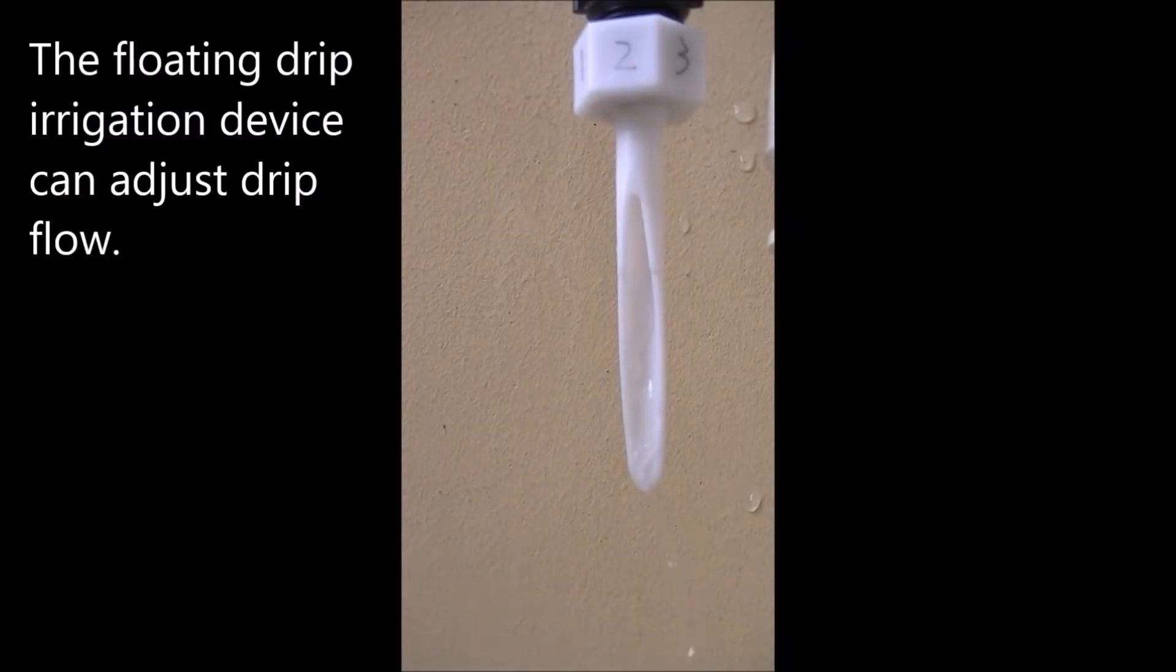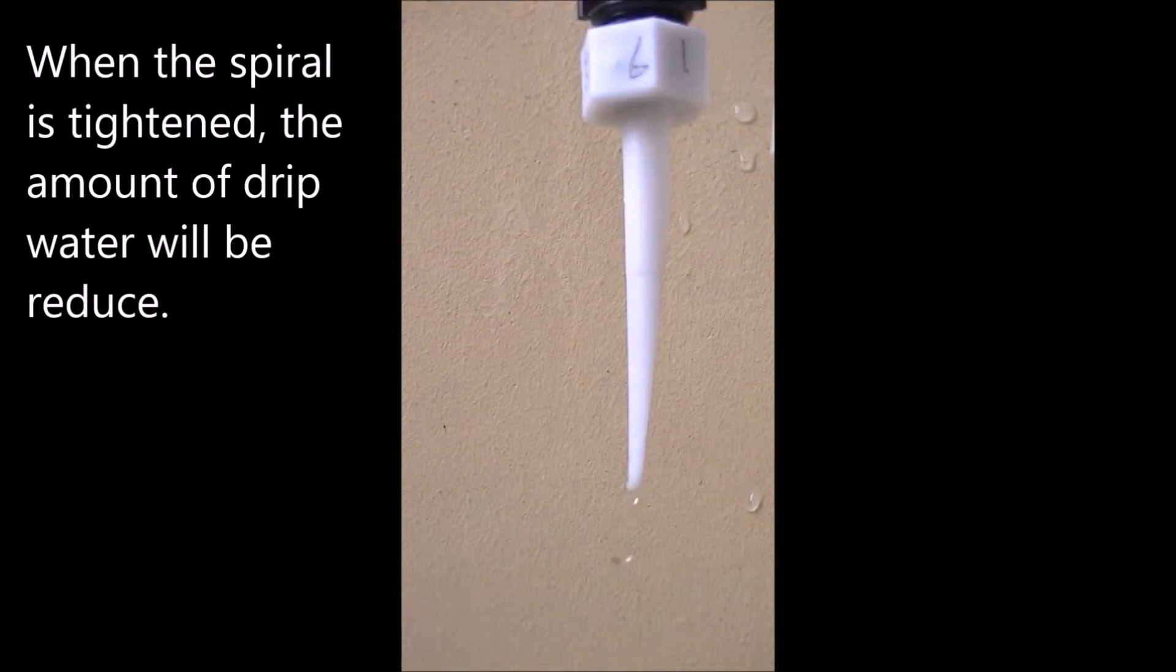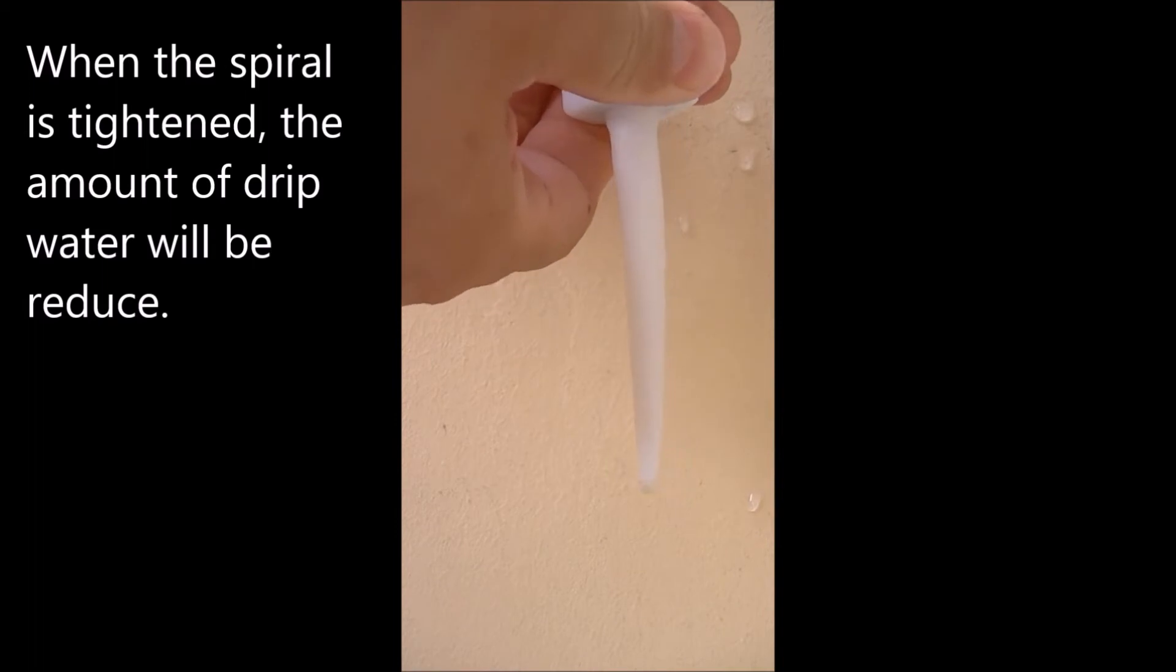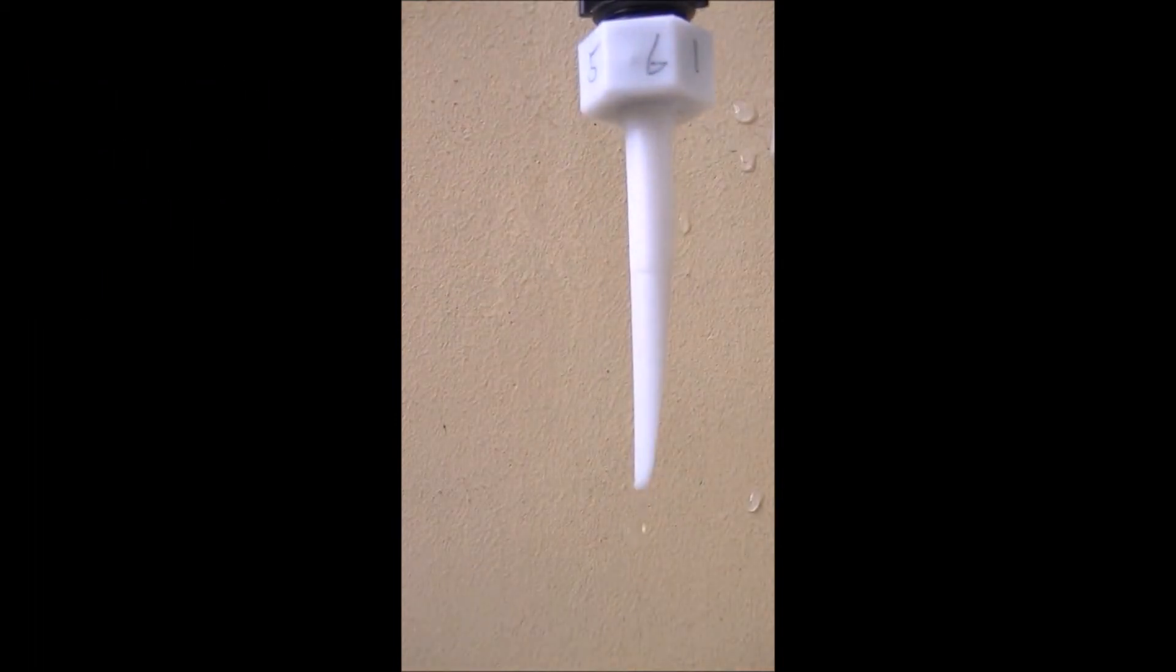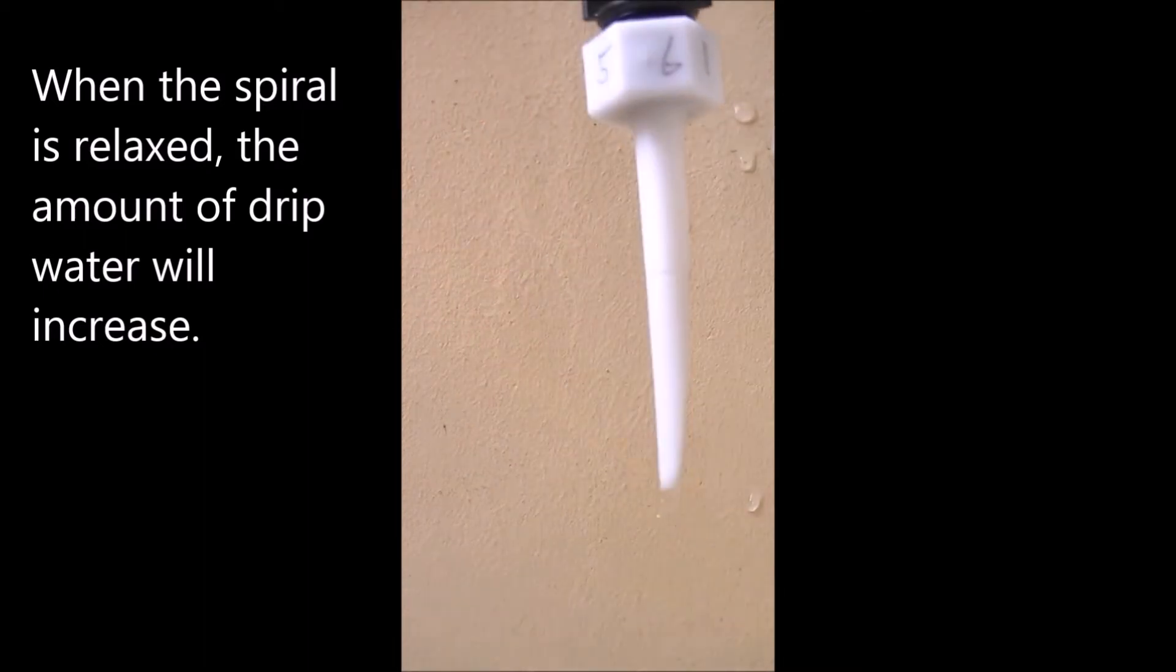The floating drip irrigation device can adjust drip flow. When the spiral is tightened, the amount of drip water will be reduced. When the spiral is relaxed, the amount of drip water will increase.